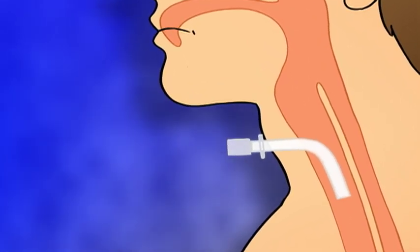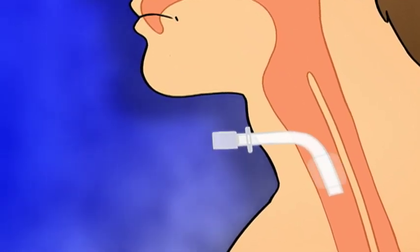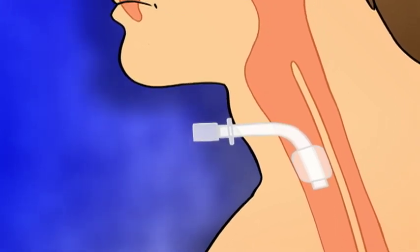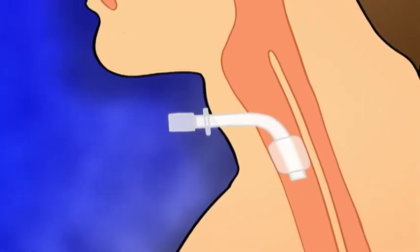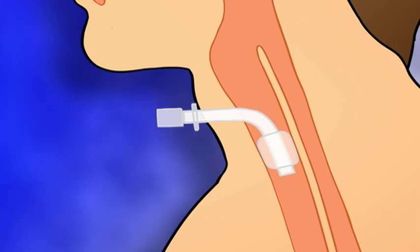After a tracheostomy tube is inserted, a cuff on the tube is usually inflated to hold it in place and seal off the upper airway. This permits positive pressure ventilation. All inhaled and exhaled air must pass in and out of the trachea through the tube, not through the nose and mouth.